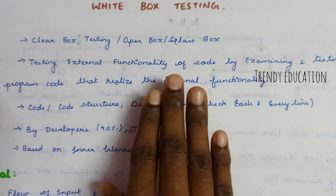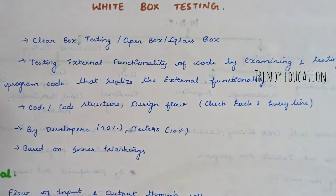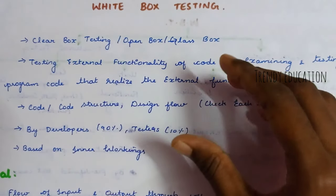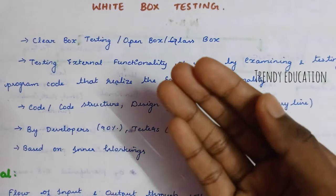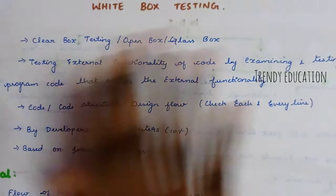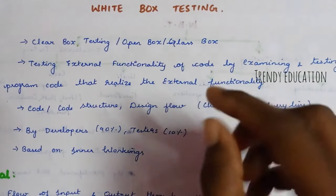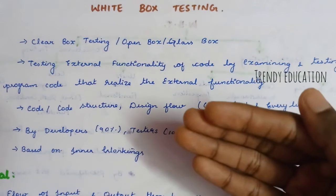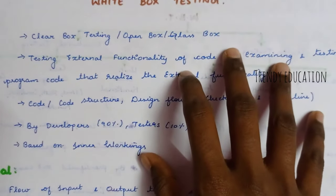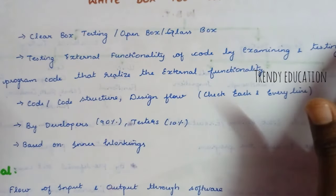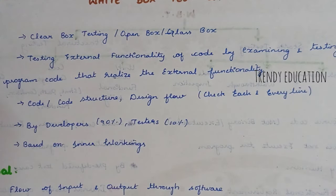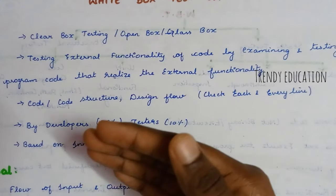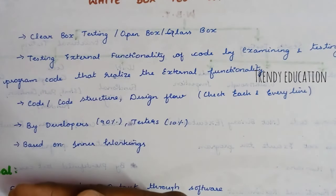So this is also called Clear Box Testing, Open Box Testing, or Glass Box Testing. In white box testing, the tester can see and understand the code — they can interact with, change, and check the code, as well as check the external functionality.